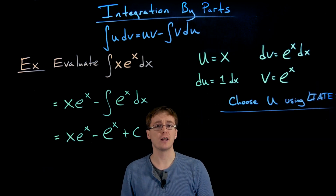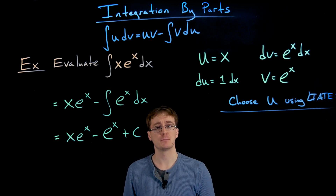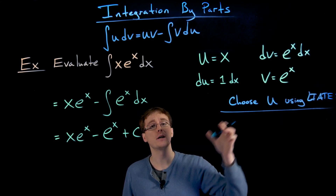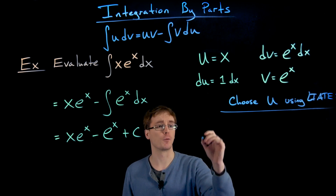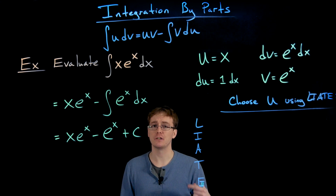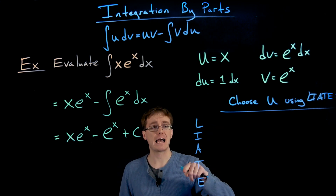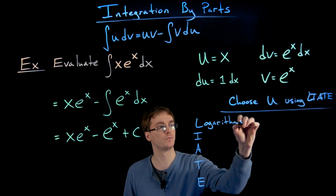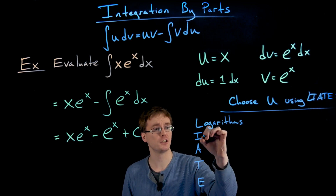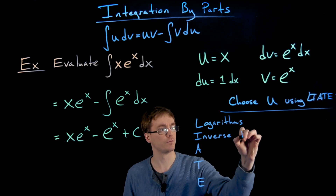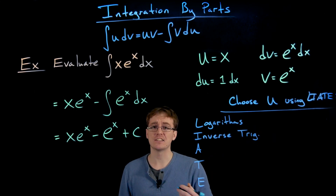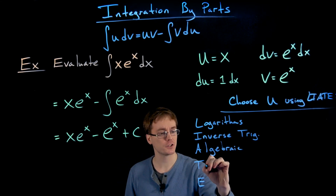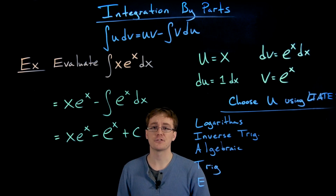The acronym useful for identifying the pieces for our integration by parts formula is called LIATE. It helps us make the choice for u and describes a hierarchy. The L stands for logarithms or logarithmic functions. The I stands for inverse trig functions. The A stands for algebraic functions. The T stands for trigonometric functions. And the E stands for exponential functions.